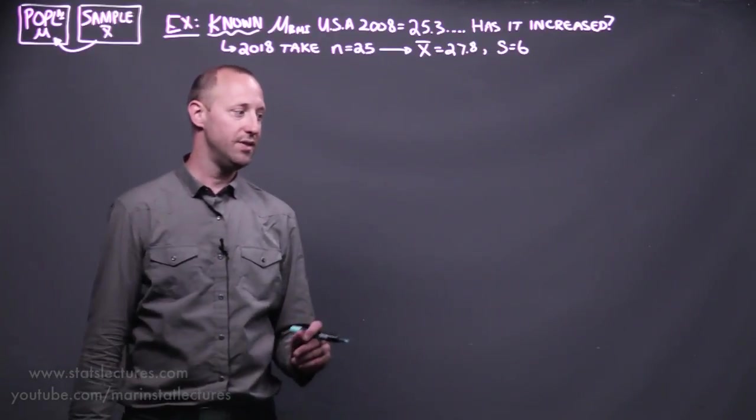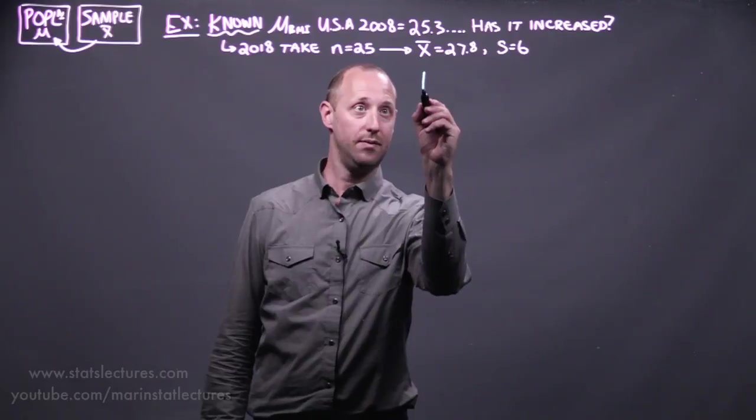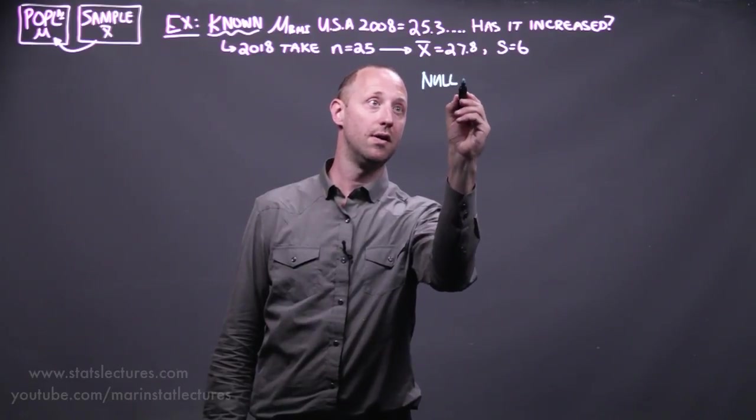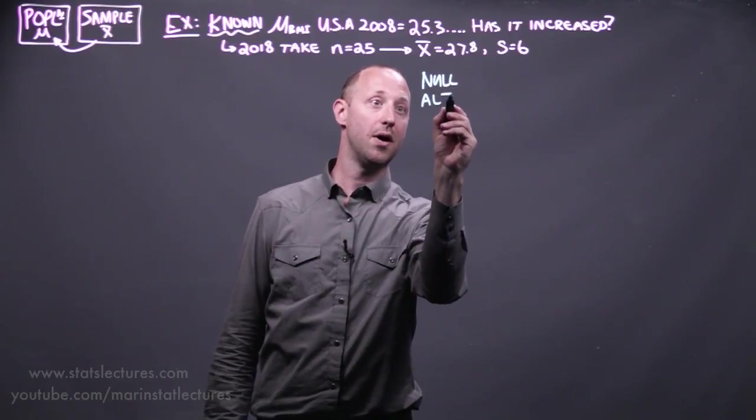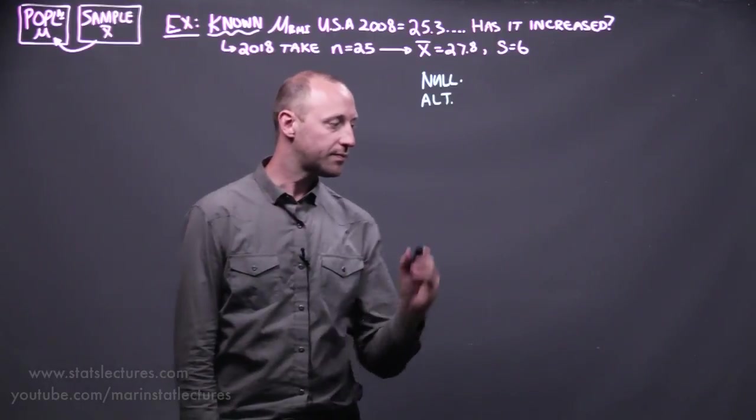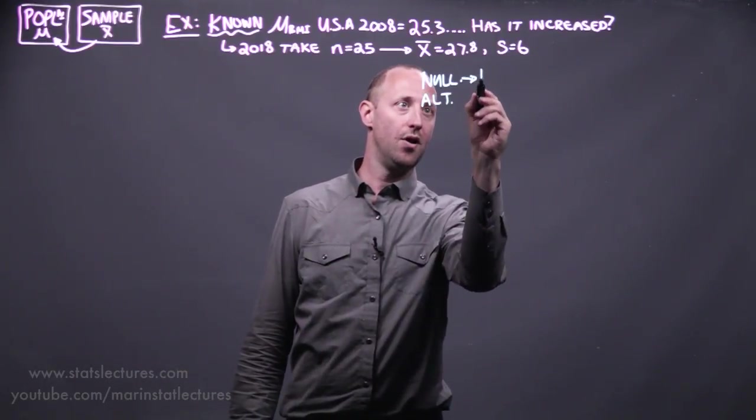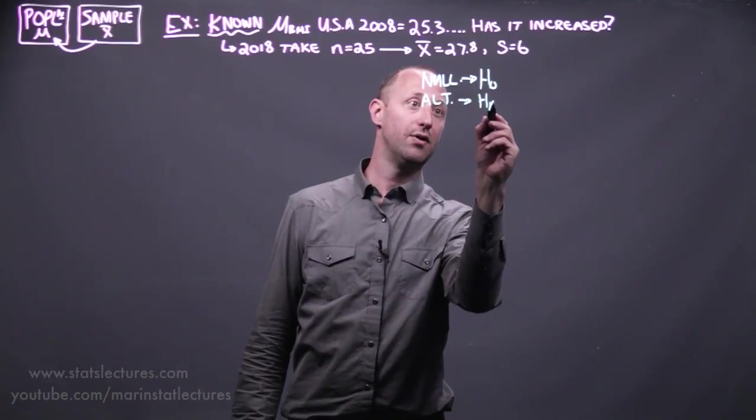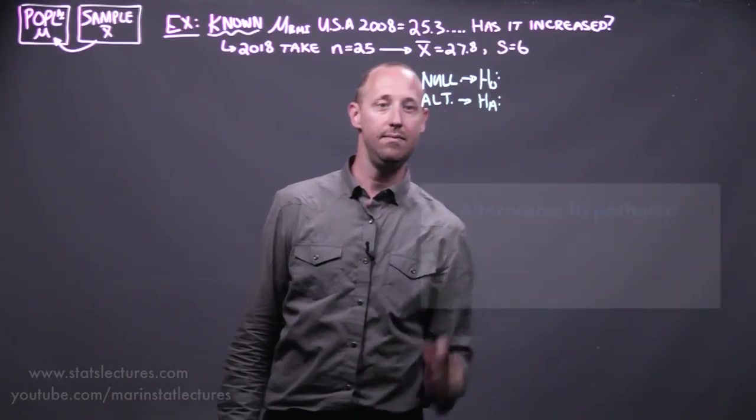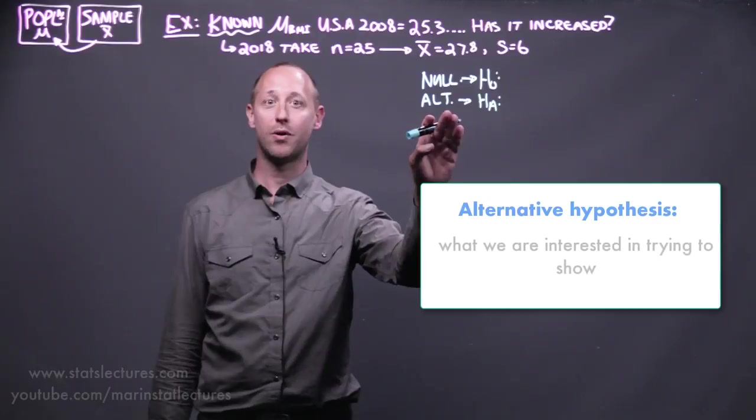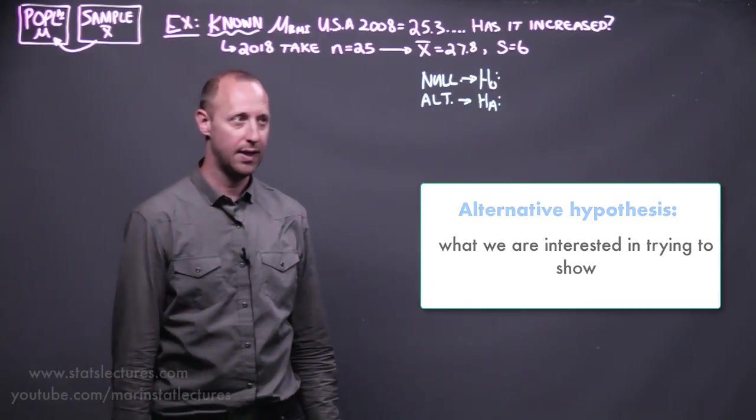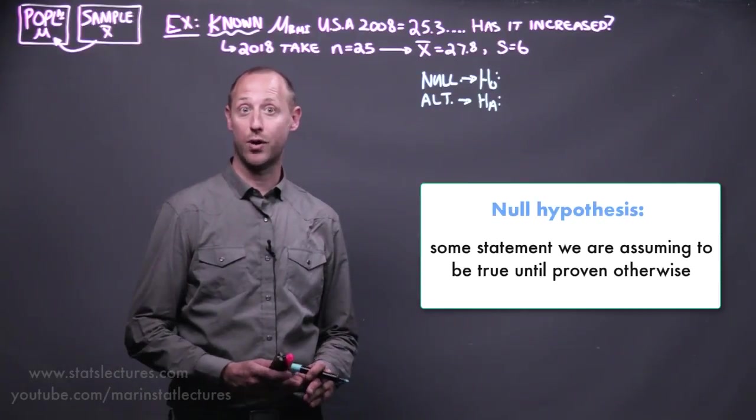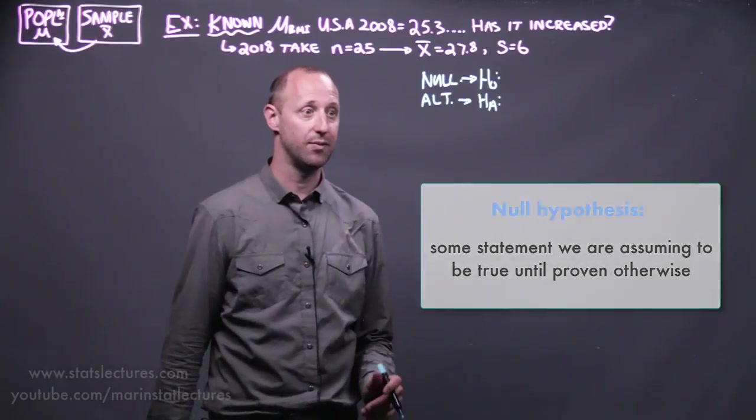So to do this, we start by creating what we call a null and an alternative hypothesis. The null hypothesis we label H0, and the alternative we label HA. The alternative is usually what we're interested in trying to show, and the null is some statement we're going to assume to be true until convinced otherwise.